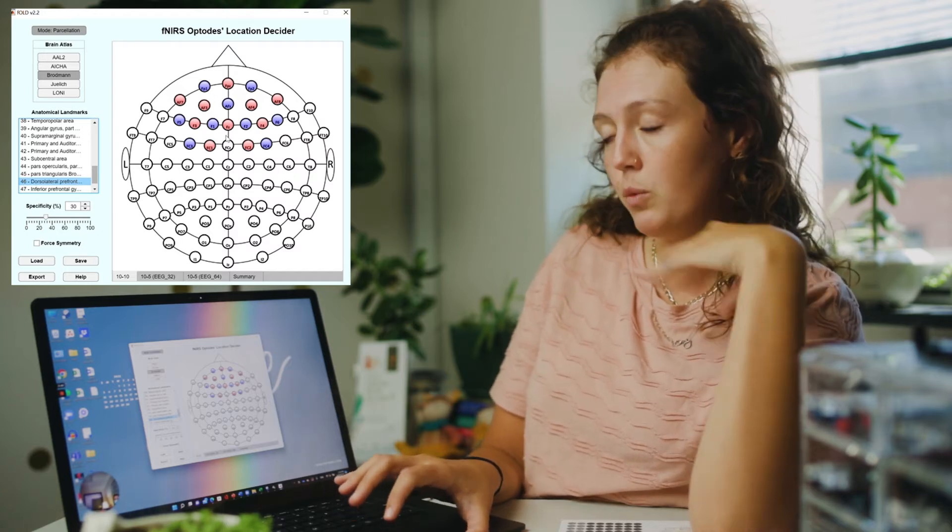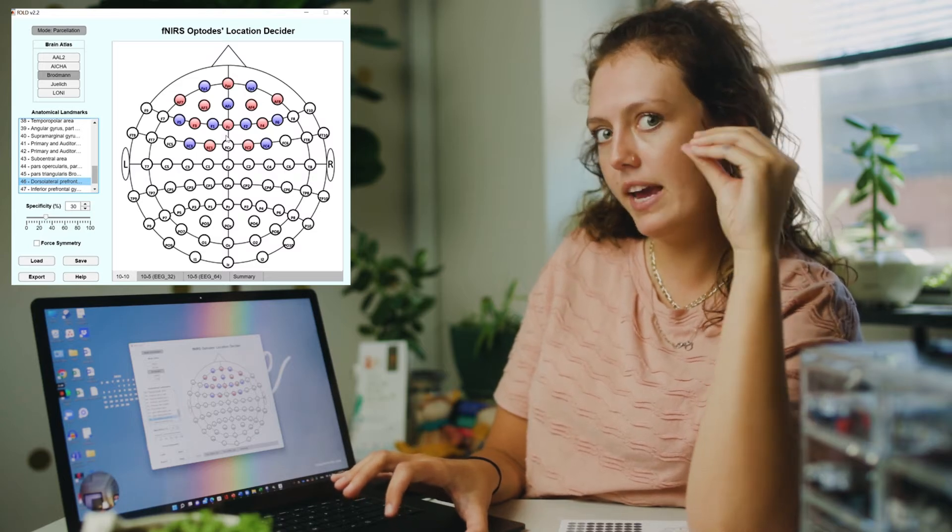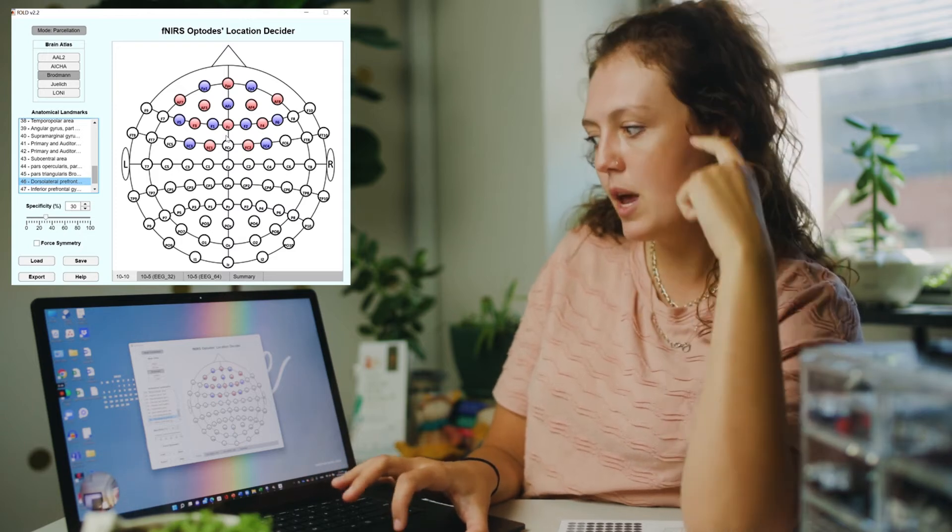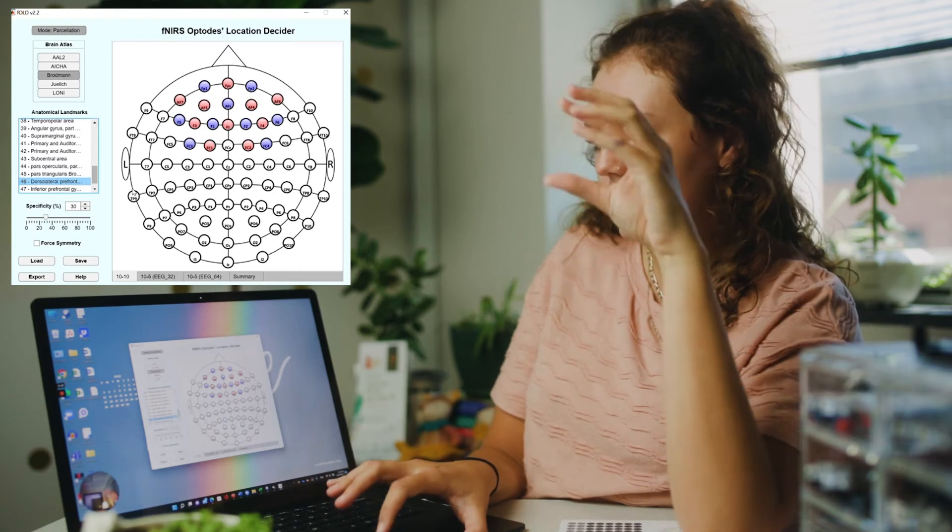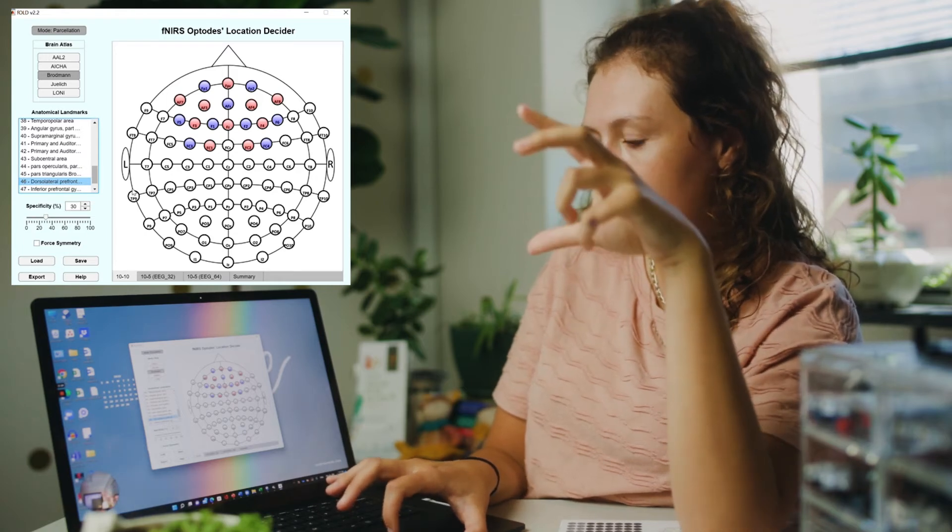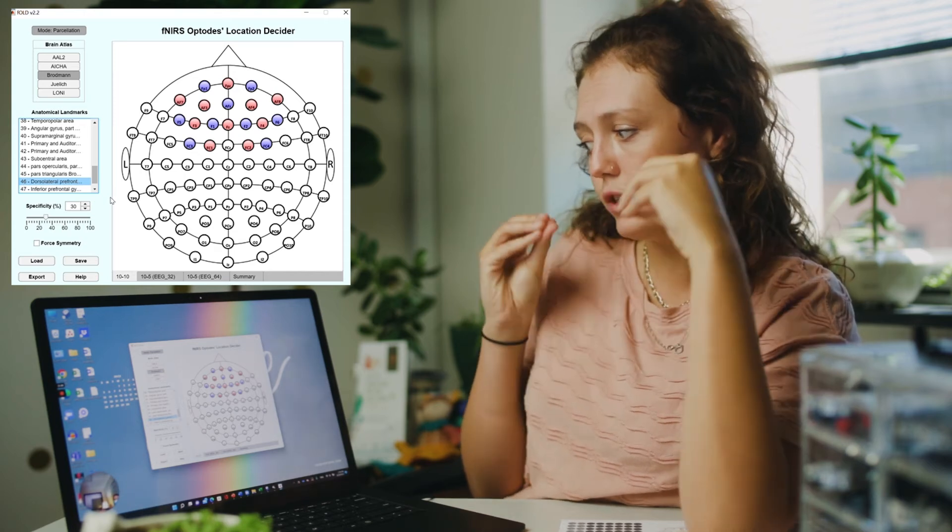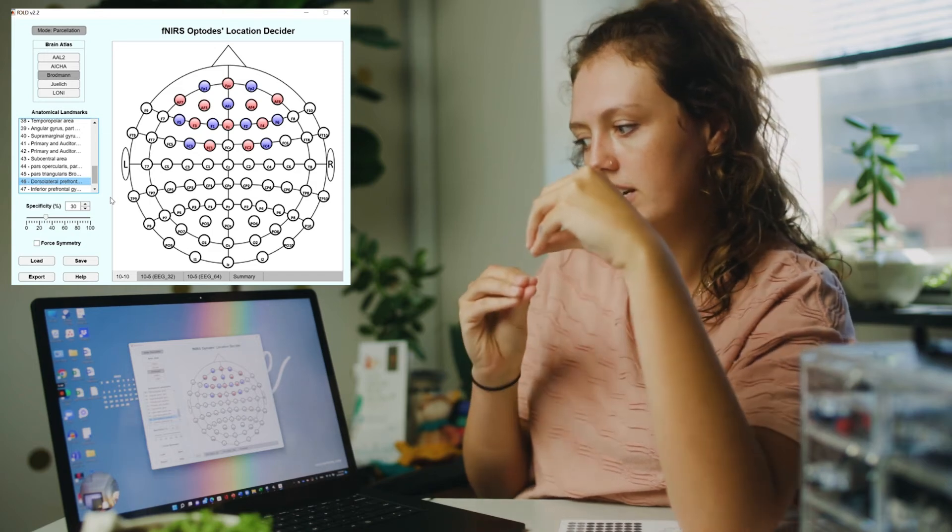Now, as you can see, my FNIRS machine only has an 8x8 configuration, meaning I only have 8 sources and 8 detectors, but we have more than 8 sources and 8 detectors here. So we need to adjust the specificity higher so we lose some of these channels or sources and detectors, but we're still accurately covering the anatomical region of interest.